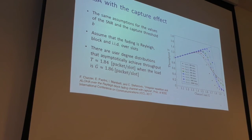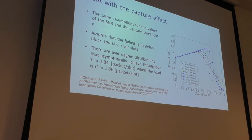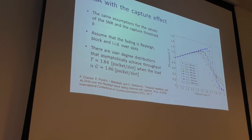To summarize the progression: starting at 0.37 with standard slotted aloha, then 0.43 with capture effect alone, and now almost 2.0 with capture effect plus interference cancellation. Of course, these results rely on strong assumptions — perfect interference cancellation, IID Rayleigh fading — but they show there is real promise in these kinds of schemes.